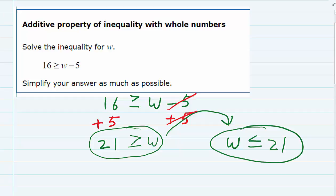and the only reason I would change the direction of that sign would be if I were changing the location of the variable. If I'm flipping left and right, I have to change the direction of the sign. But if I am adding or subtracting on both sides of the inequality, nothing needs to change.